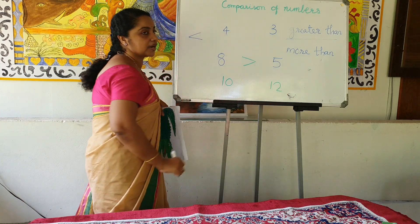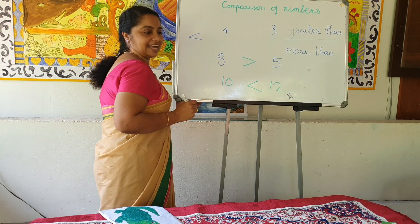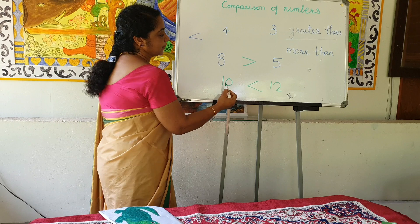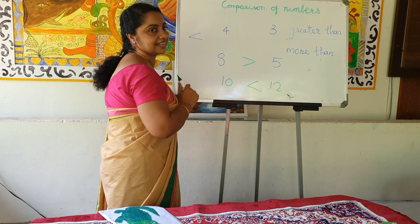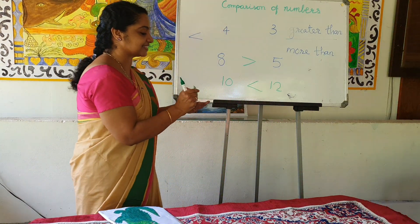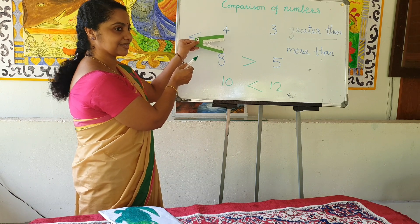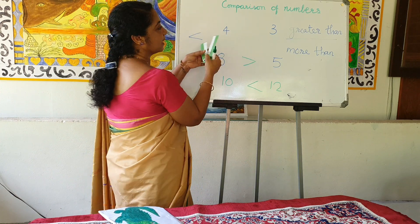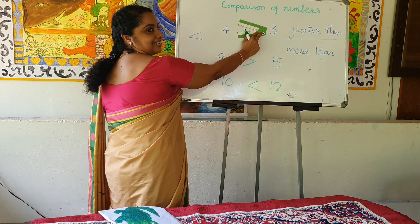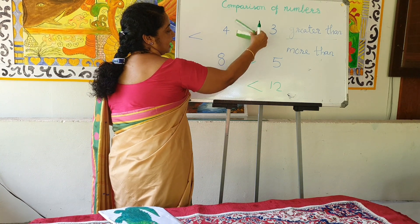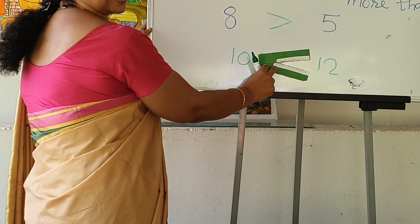Look at 10 and 12 — which one is big? Ali wants to eat the biggest number, so Ali's mouth opens towards 12. We can say 12 is greater than 10. And look — I made this paper like Ali's mouth. You can also use this paper. Here, 4 or 3 — which is big? 4. So put the mouth towards 4 — 4 is greater than 3. And 8 is greater than 5. And 12 is greater than 10.